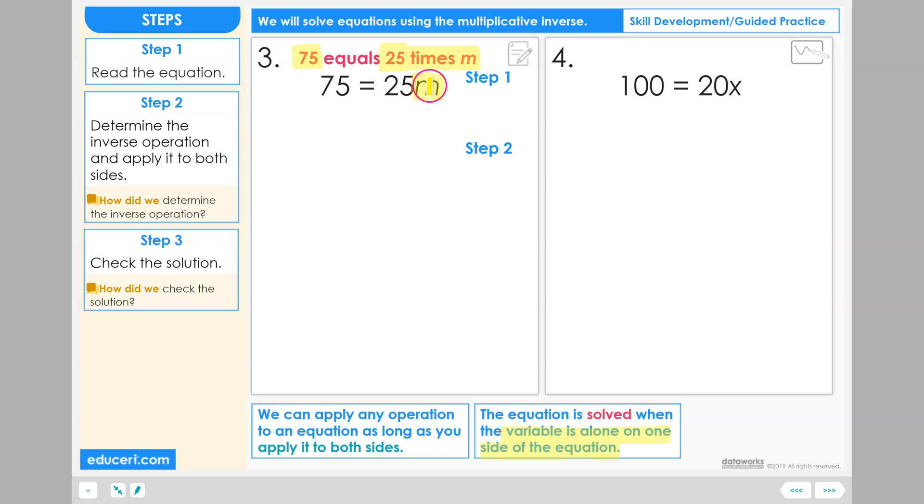Why is m not alone? Because it's being multiplied times 25. How do we undo multiplying by 25?